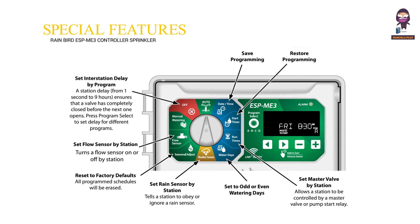Special features. Set interstation delay by program — station delay from 1 second to 9 hours ensures that a valve has completely closed before the next one opens. Press program select to set the delay for different programs. Set flow sensor by station: turns a flow sensor on or off by station. Reset to factory defaults — all program schedules will be erased. Set rain sensor by station: tells a station to obey or ignore a rain sensor. Set to odd or even watering days. Set master valve by station: allows a station to be controlled by a master valve or pump start relay.